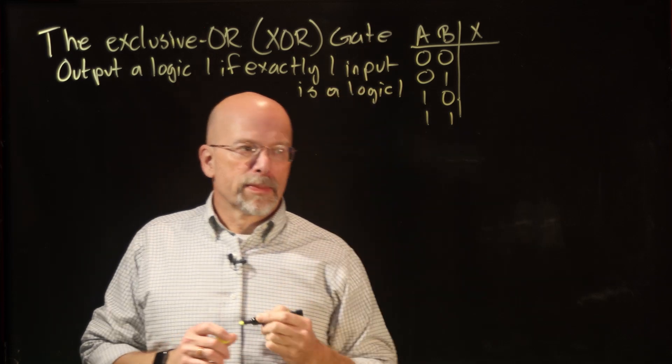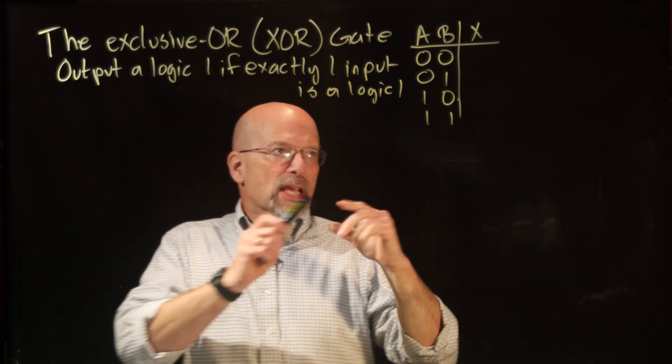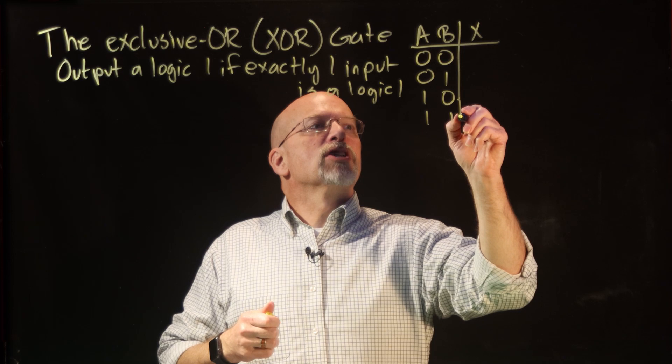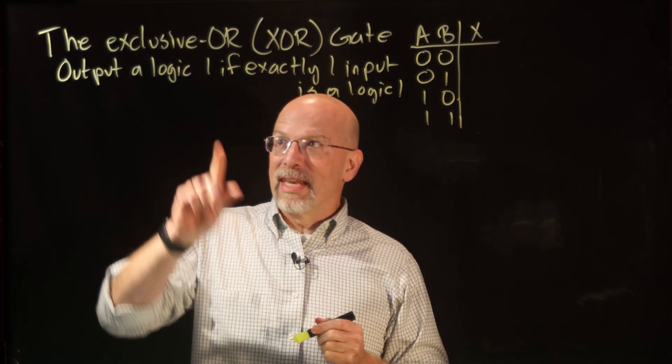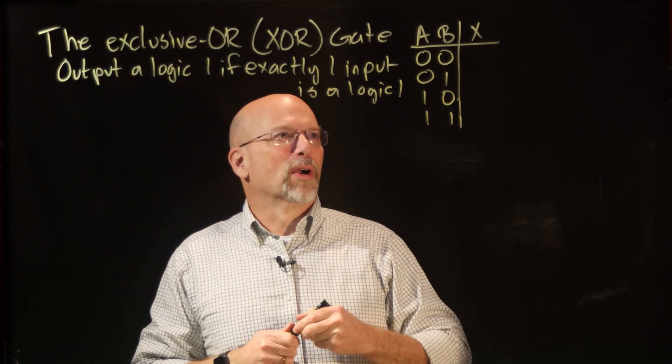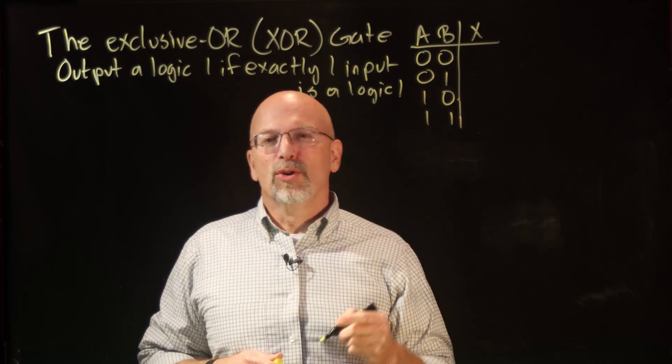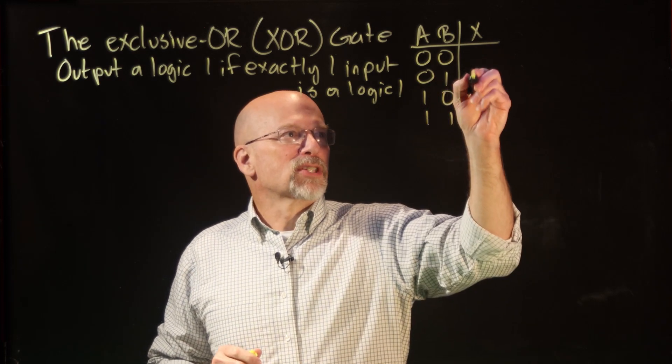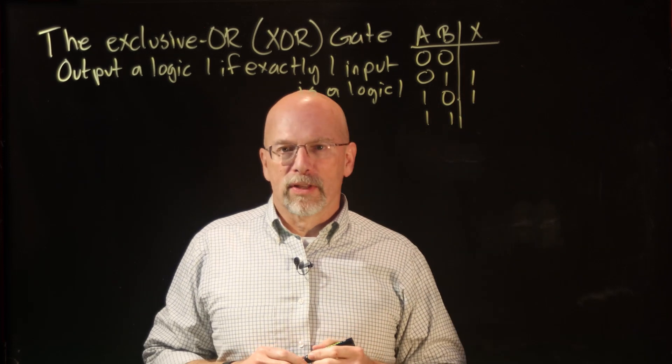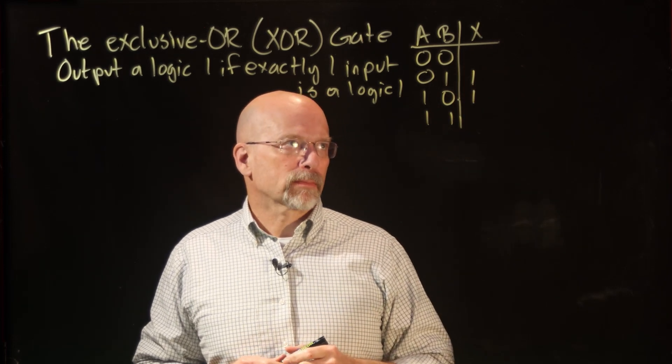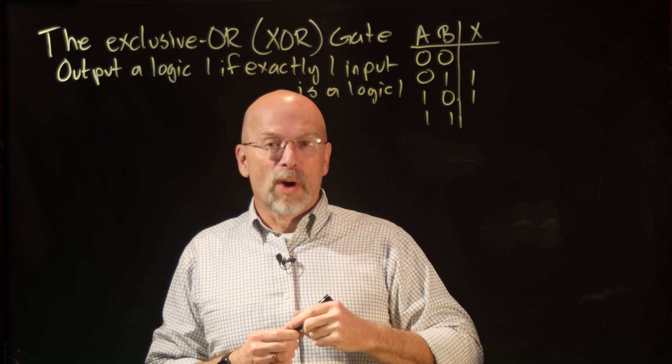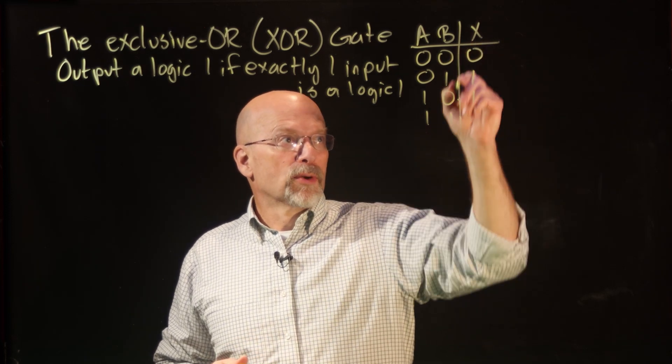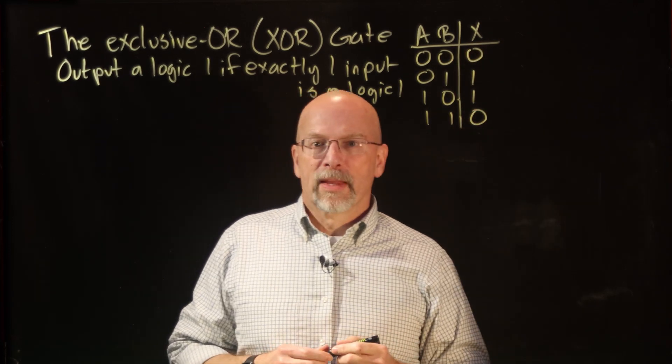Now this definition kind of suggests how we came up with the name exclusive-OR. There are exactly two rows where there's exactly one 1 at the input: the second row and the third row of this two-input gate. The other two options, 0,0 and 1,1, you put zeros there.